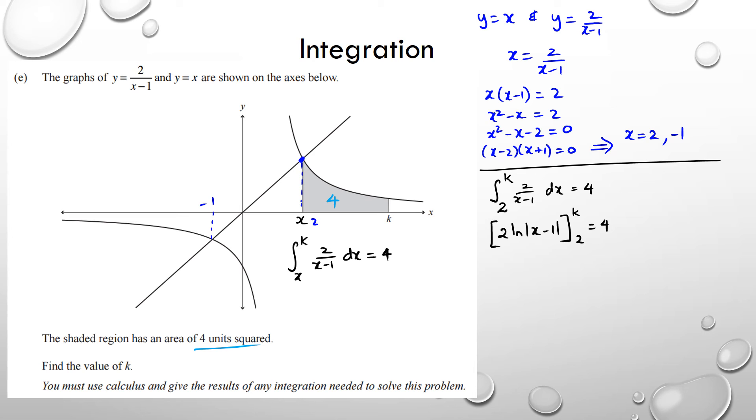So substituting my values, I'm going to get 2 ln of k minus 1 minus 2 ln of 2 minus 1, and that equals to 4. So I have 2 ln of k minus 1 minus 2 ln of 1, and that equals to 4. Now ln of 1 is equal to 0. So I could really have 2 ln of k minus 1 minus 0 equals 4, or just 2 ln of k minus 1 equals 4.